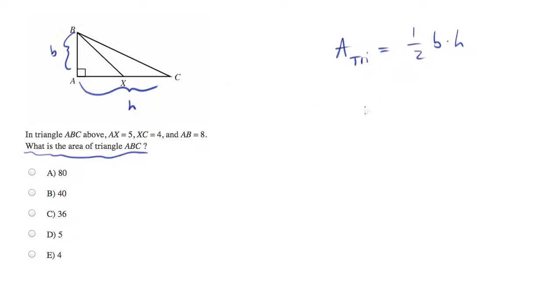Can we calculate the value of those sides? Well, we're told AX equals 5, XC is 4, and AB is 8.